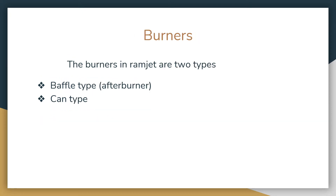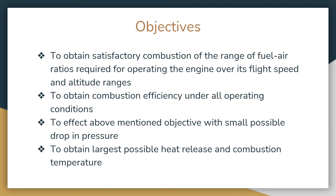There are two different types of burners used in a ramjet: the baffle type and the can type. The baffle type burners are mostly used in afterburner ramjets, where ramjets are attached to turbojets. The can type burners are usually used in a typical ramjet engine, with 5 to 12 cans — not more than 11 or 12 — used for burning fuel.